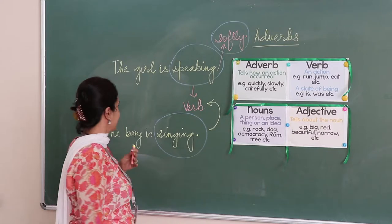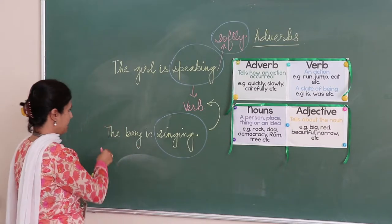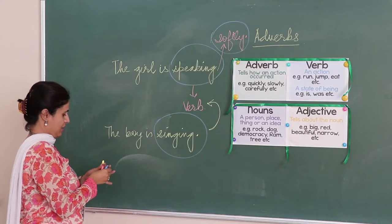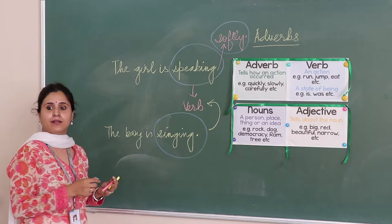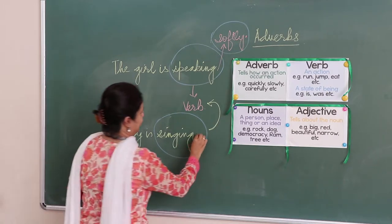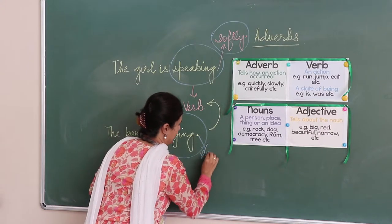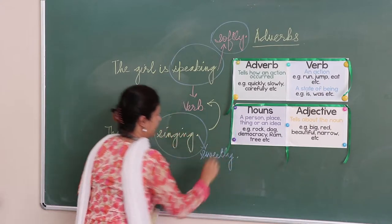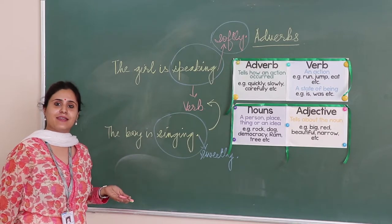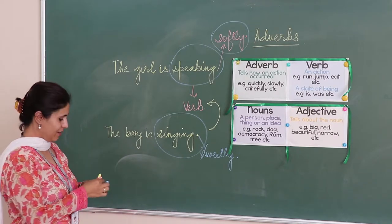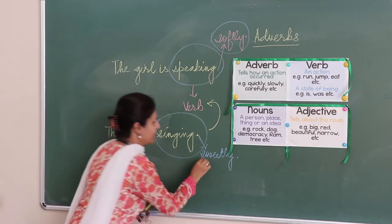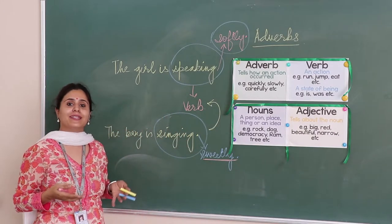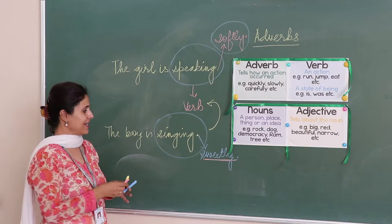For example, here: 'The boy is singing.' What could we add here? Sweetly. So how is he singing? Sweetly. So here we have this word which is further elaborating upon the action. These words which further elaborate on verbs or actions are called adverbs.